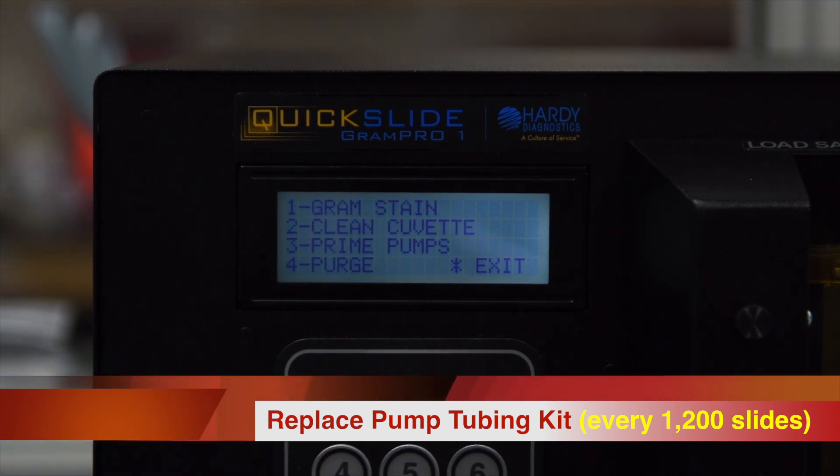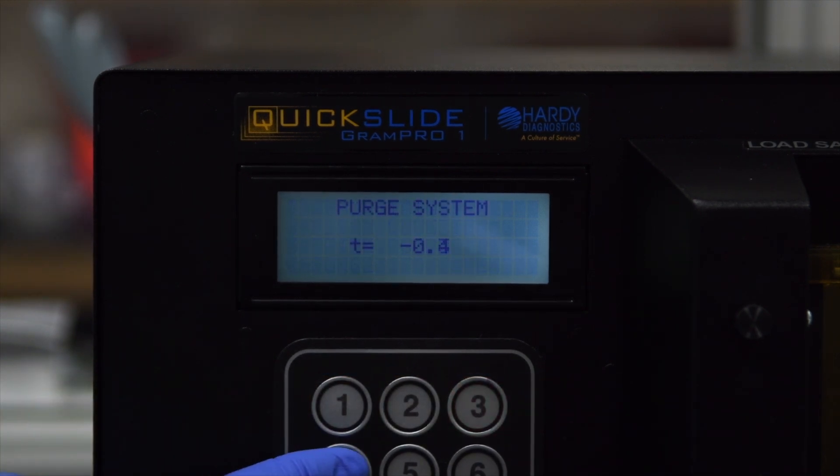Press 1 to select Run. Press 4 to select Purge. Repeat this step twice to make sure that all the reagents are emptied from the tubes.